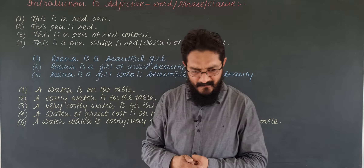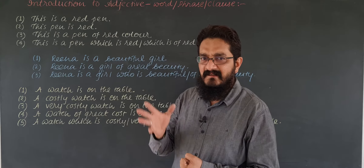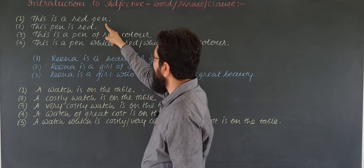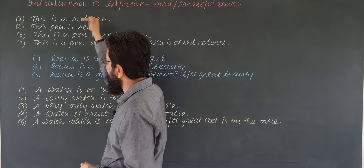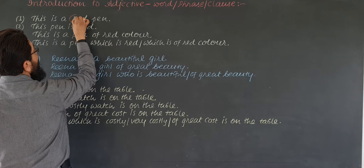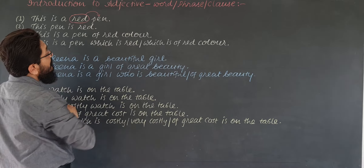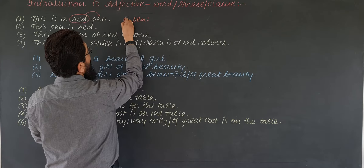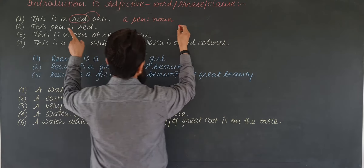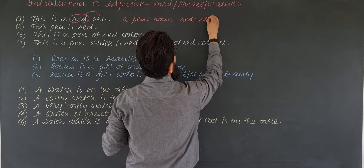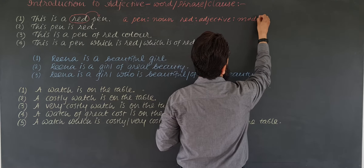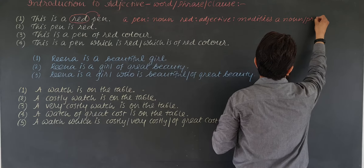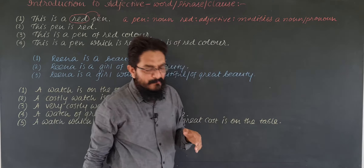Then there are some nouns which are abstract also. For example, love, hatred — these are abstract nouns. But pen — I can touch a pen, so it is a noun. Now see, the word 'red' modifies a noun. So the word that modifies a noun or pronoun is an adjective. Red is adjective. Why? It modifies a noun. Sometimes it can modify a pronoun also. So noun and pronoun can be modified by adjectives.